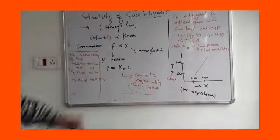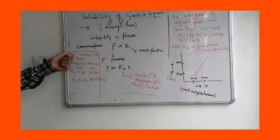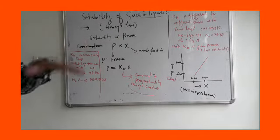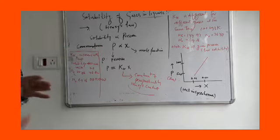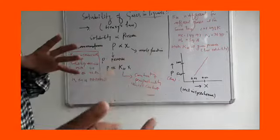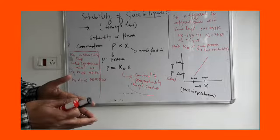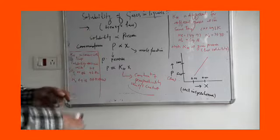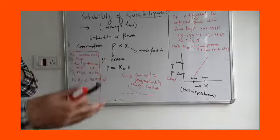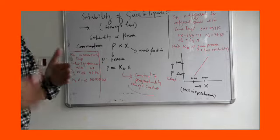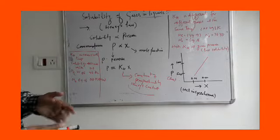Higher the value of KH, lower will be the solubility. KH depends on temperature — it increases with temperature if you raise the temperature. Since higher KH means lower solubility, solubility will increase with decrease in temperature.